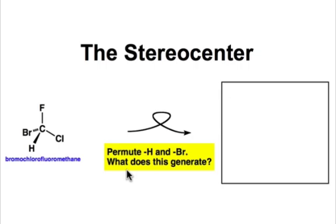By permuting, or in other words exchanging two of the groups on a stereocenter, we'll generate a stereoisomer, and that's in fact the definition.